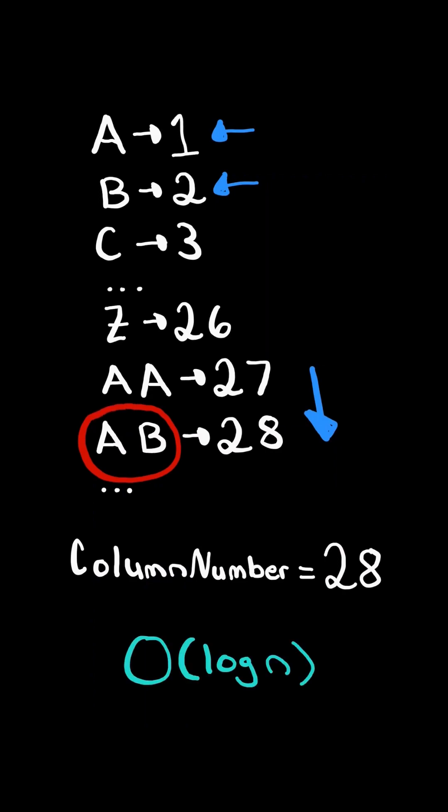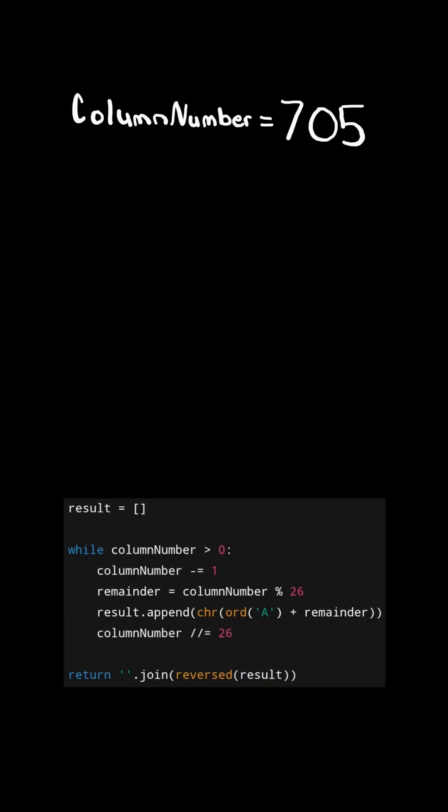We will solve this in O of log n time. First, consider the code below. While the column number is greater than zero, we subtract one. This is so we adjust for the one indexing, since column A starts at one.